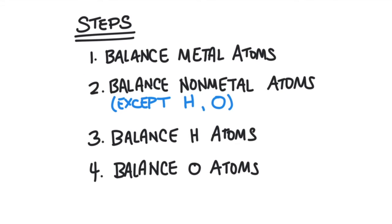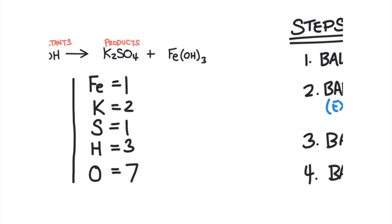Here are the steps. First, balance all of the metal atoms. Then balance all of the non-metal atoms, except for hydrogen and oxygen. Then you can balance the hydrogen atoms. And then finally balance the oxygen atoms — although oxygen will usually balance itself, which is why we leave it till the end.